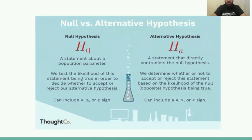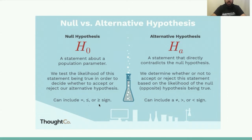To summarize: the null hypothesis is a statement about a population parameter, and the alternative hypothesis directly contradicts the null. We test the likelihood of the null being true in order to decide whether to accept or reject our alternative hypothesis. By convention, in the null hypothesis we can include signs such as equal to, less than or equal to, or greater than or equal to. In the alternative hypothesis we include the exact opposites.